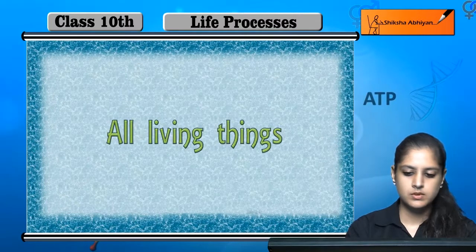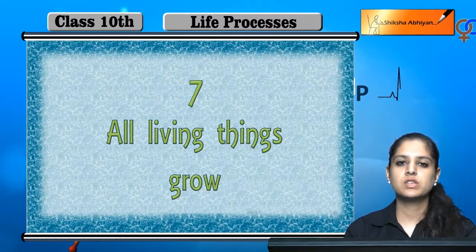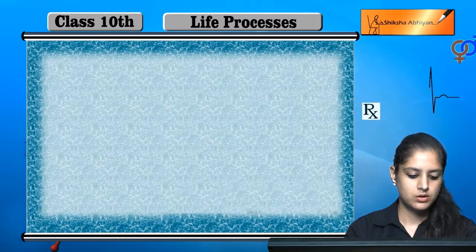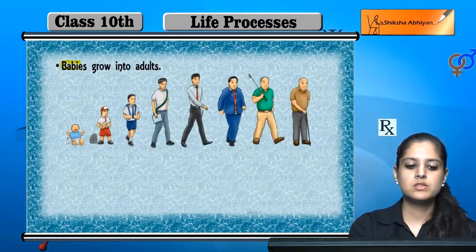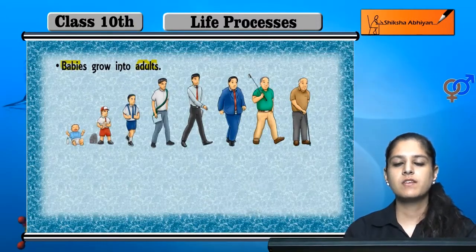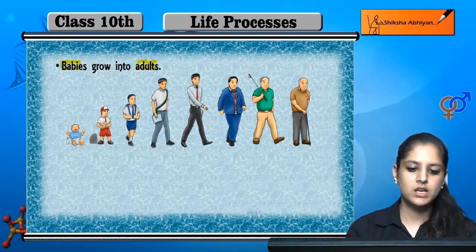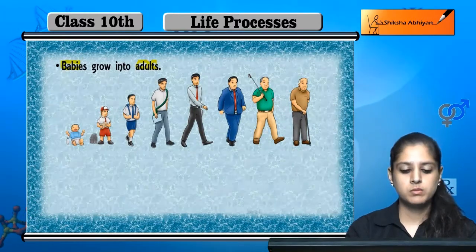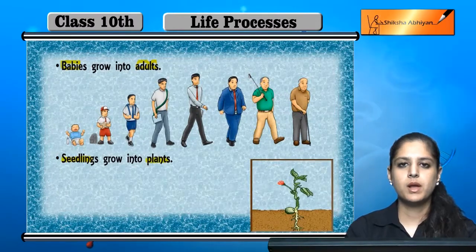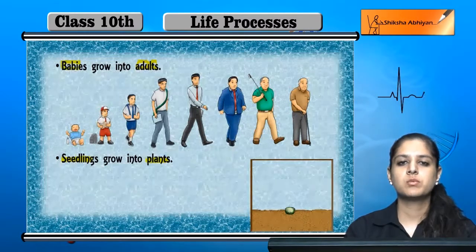The seventh process is that all living things grow. Growth is present in each living thing. Living things grow from babies to adults and ultimately to old age — this applies to human beings, animals, and plants. In plants, seedlings grow into full plants.